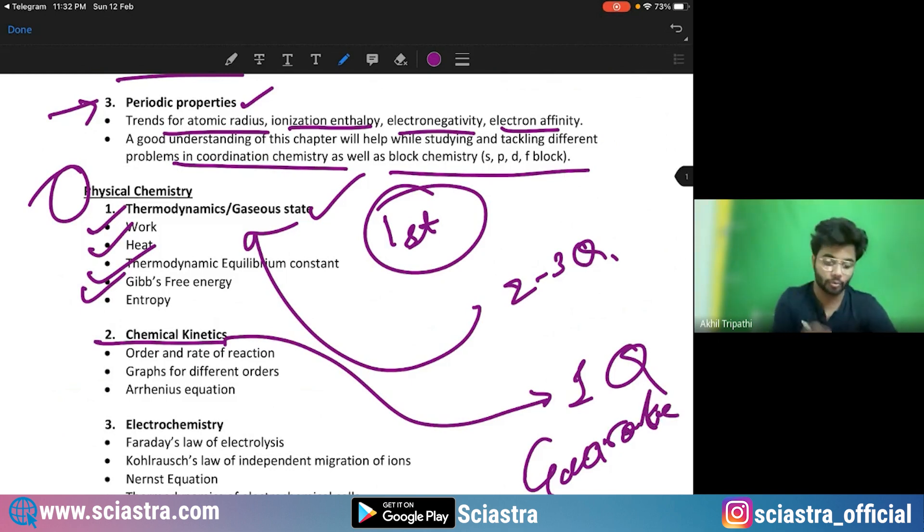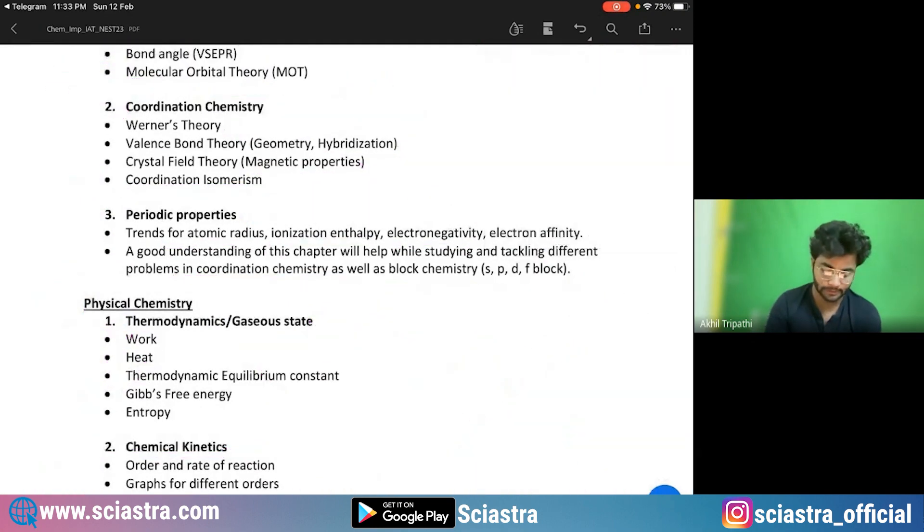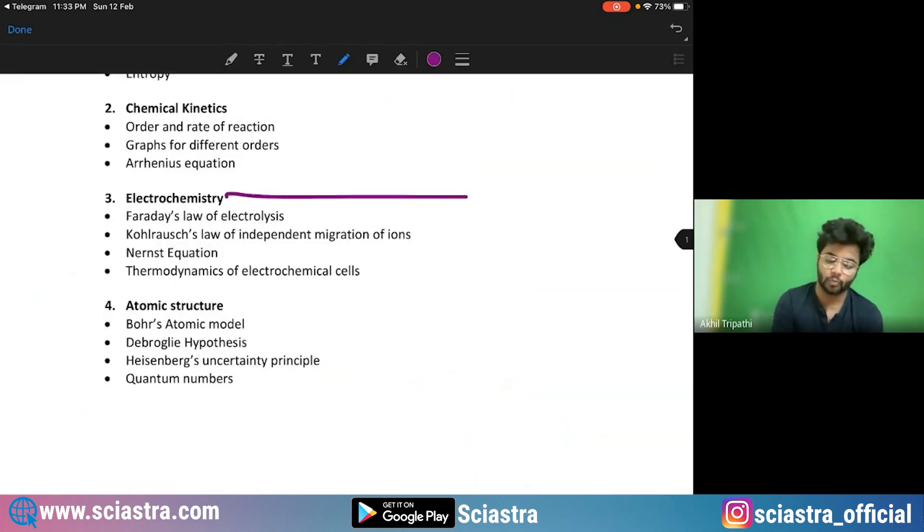One question guaranteed, especially you must know the derivation of order and rate reactions, rate equations for different order of reactions, then graphs of different orders, exponential graph, or a straight line, or with respect to logarithm, all those graphs, then Arrhenius equation is very important. Coming to electrochemistry, again one to two questions can come from here. Faraday's law, Kohlrausch's law, Nernst equation and thermodynamics of electrochemical cells. Nernst equation particularly very important.